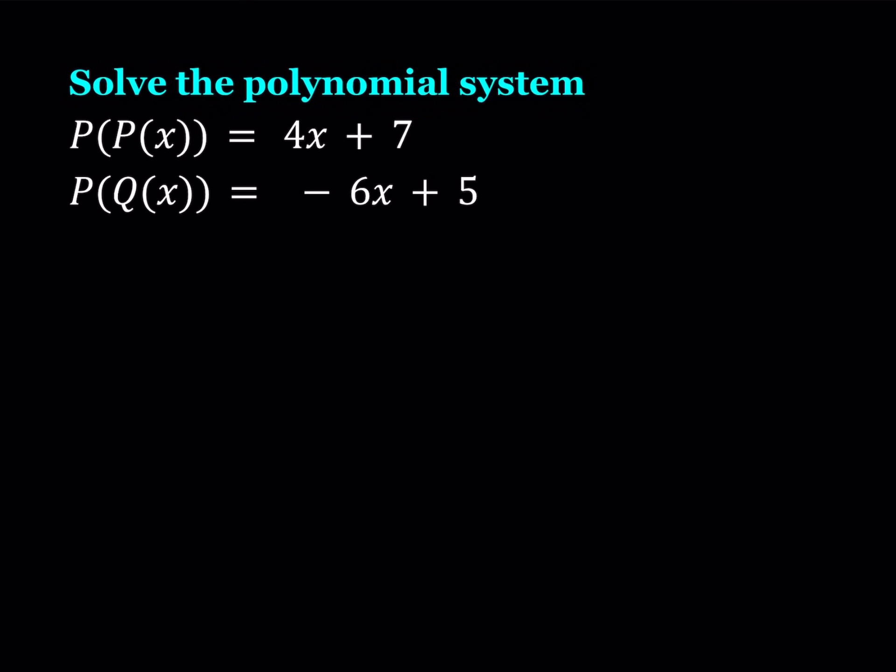Hello everyone. In this video we're going to be solving a polynomial system. We have P of P of X equals 4X plus 7 and P of Q of X equals negative 6X plus 5. P(x) and Q(x) are polynomials, so this could be considered a functional system as well with functions being some special type.